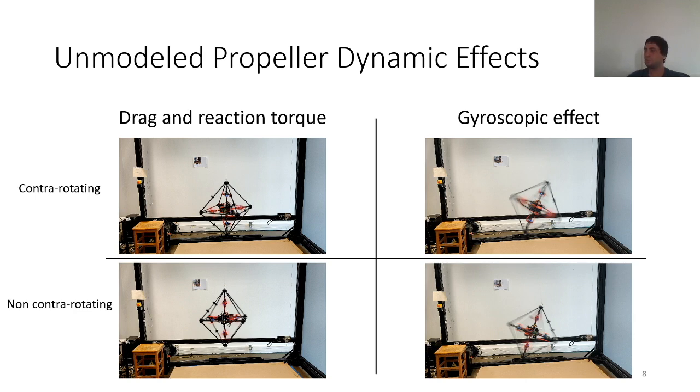We think it can be turbulences, but in any case for the gyroscopic effect, the contra-rotating propellers do not have any advantage.